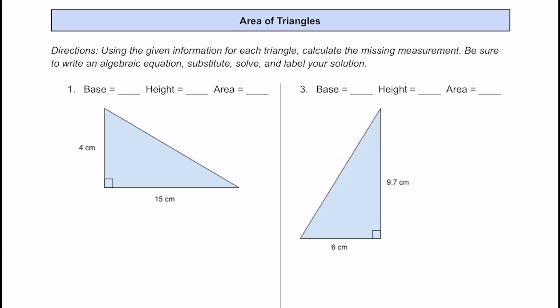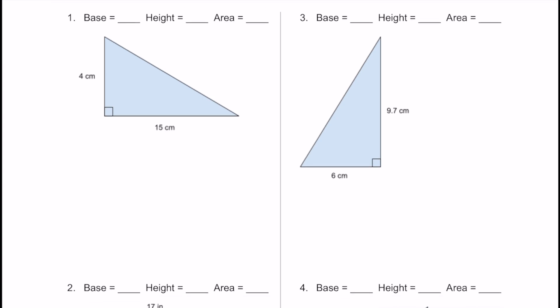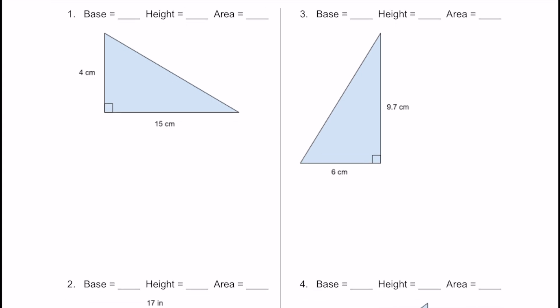Let's practice finding the area of triangles together. Let's jump right into number one. We're going to use either of those formulas, so first we'll identify the base. The base is this measurement going across, and that looks like it's going to be 15 centimeters.